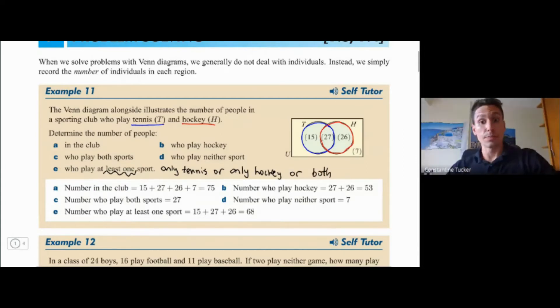So notice only tennis would be just the 15 here on the left. Only hockey would be the 26 on the right and both would be the 27 in the middle. So basically they're really asking us to add the 15, the 27 and the 26 and put those numbers together and get 68. So keep this in mind at least one is exactly what we've done here. So either this or that or both.